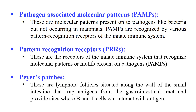Next are Peyer's Patches. These are lymphoid follicles present along the small intestine. They entrap antigens of the gastrointestinal tract and provide a site where B and T cells interact with and kill the antigen.